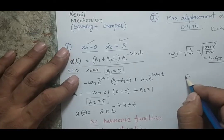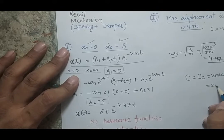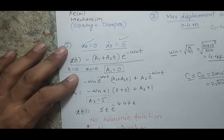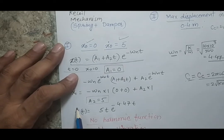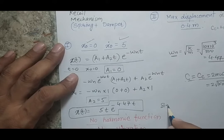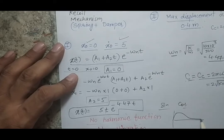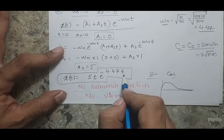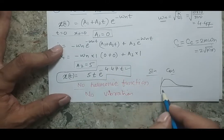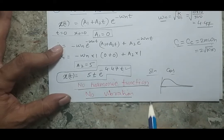The damping value equals C divided by CC, which equals 2mωₙ or 2√(km) — both are the same. In this response expression you can see there is no sine or cosine function. Because this is a critically damped system, the system will have some motion and then return to zero position. As time increases, the negative exponential term causes the whole expression to become less and less, finally reaching zero. There is no oscillation — the system has aperiodic motion with no harmonic function, no vibration.